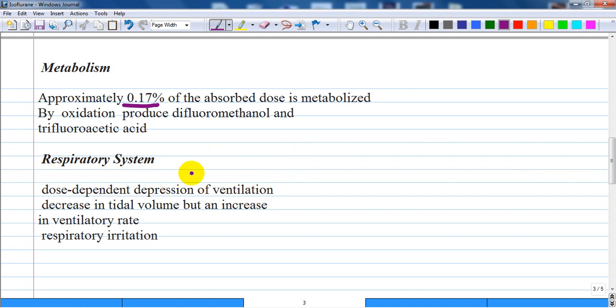Respiratory system: In common with other modern volatile agents, it causes dose-dependent depression of ventilation. There is a decrease in tidal volume and an increase in ventilatory rate in the absence of opioid drugs. Isoflurane causes some respiratory irritation, which makes inhalational induction with isoflurane difficult or not desired by anesthesiologists.